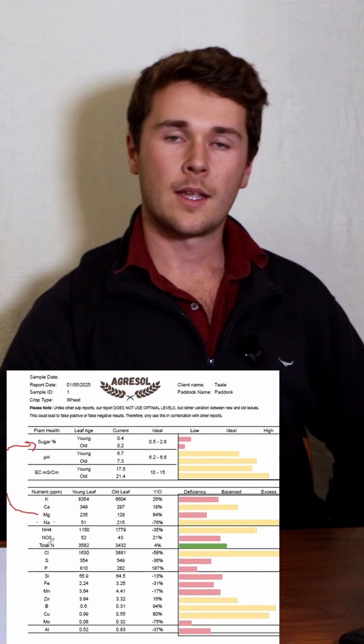The magnesium deficiency will be reducing the photosynthetic ability of the plant. And the reason why we have excess sodium as well as chloride is because we're on sodic soil or sodic subsoil.